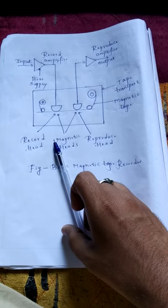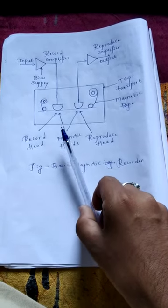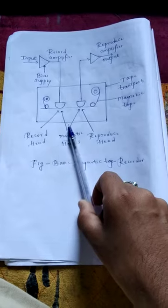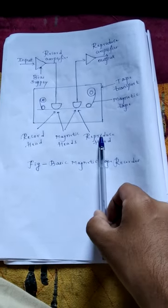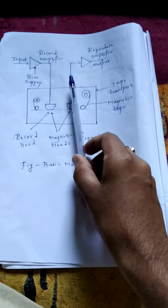Then we will move on to the working principle of magnetic tape recorder. As shown in the figure of magnetic tape recorder, it consists of a record head, magnetic heads, reproduced heads, magnetic tape, tape transport, and conditioning devices.